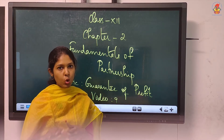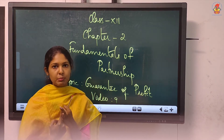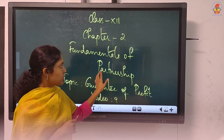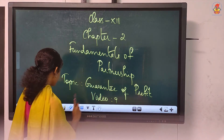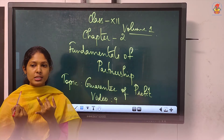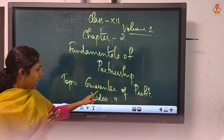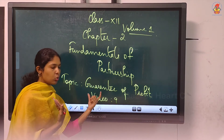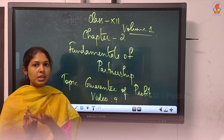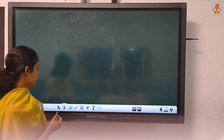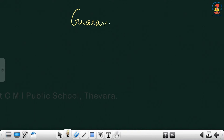The chapter on admission of a partner is over. We discussed two adjustment methods, method number one and two. We'll continue with chapter two of volume one, Fundamentals of Partnership. We had already discussed past adjustments and rectification. Now we'll discuss one more topic: guarantee of profit. This can be discussed along with the P&L appropriation topic that we learned already.